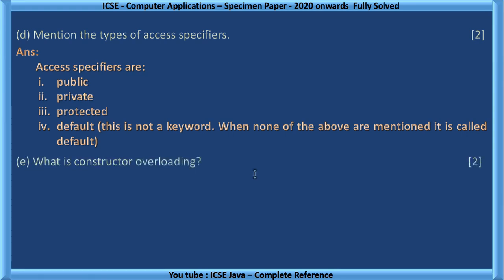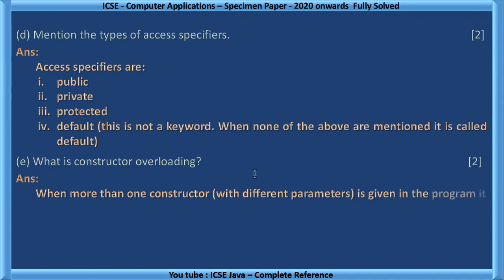What is constructor overloading? When more than one constructor, that is different parameters, is given in the program, it is called constructor overloading.